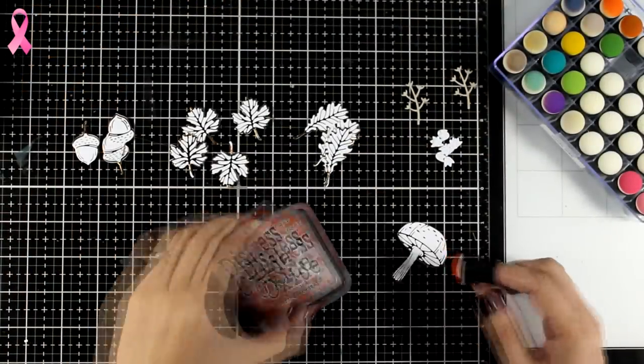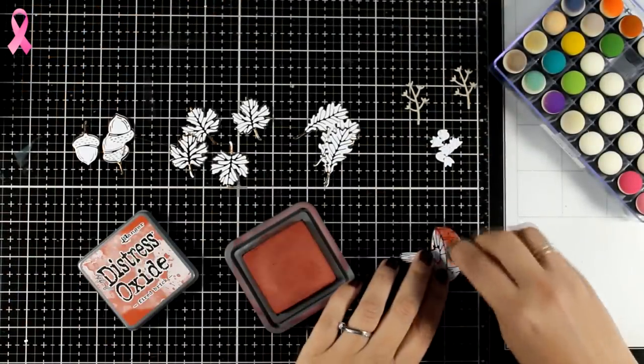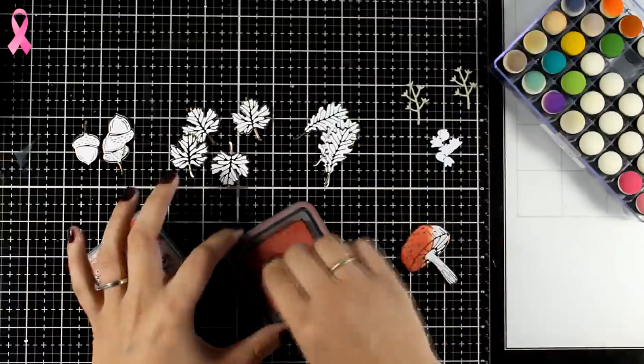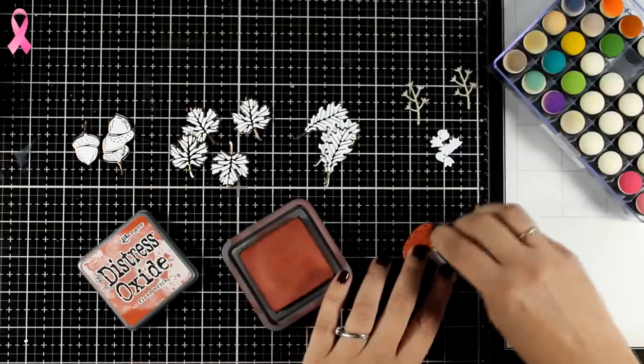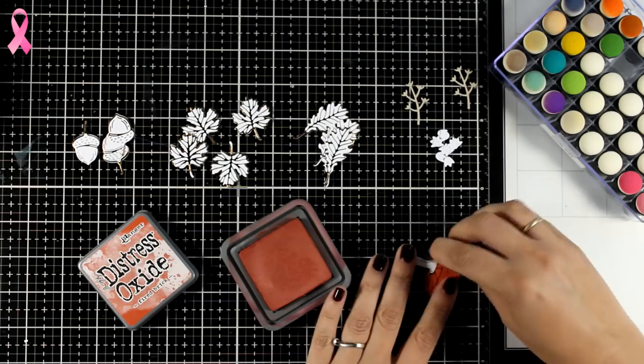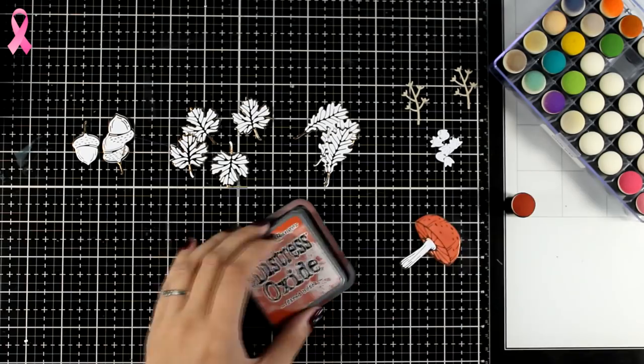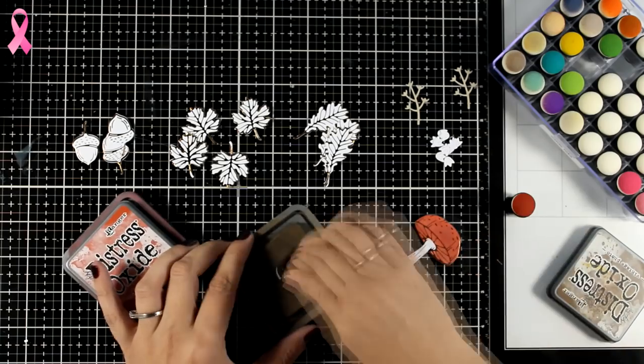So all I need to do now is to add some color on all my die cuts. For that you can go with distress oxides. That's exactly what I'm doing here. To make it easier for me I'm just using my finger dabbers.